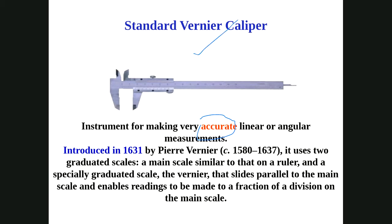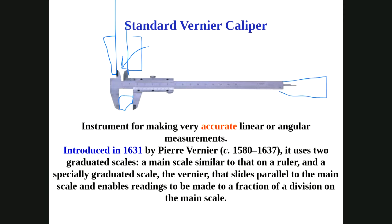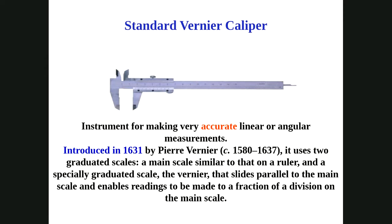Vernier calipers are widely used by mechanics around the world. They have two sets of jaws: the upper jaws measure inside diameter and the lower jaws measure outside diameter. There is also a depth probe to measure the depth of a hole or slot. The vernier caliper is a very versatile instrument. To take a reading, it has two scales — a main scale and a vernier scale — and the combination of both gives the final measurement.